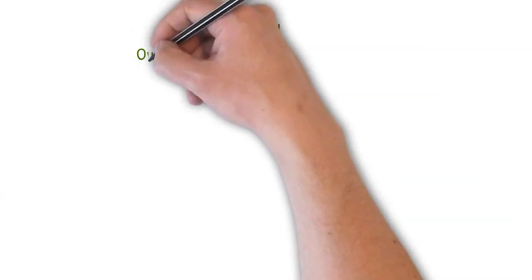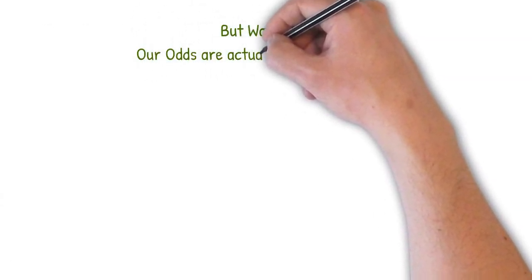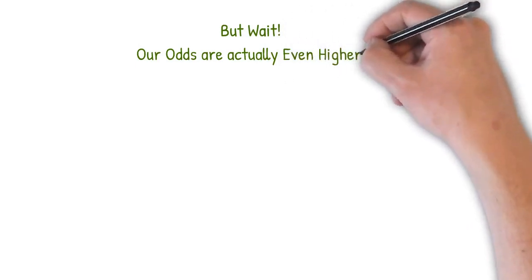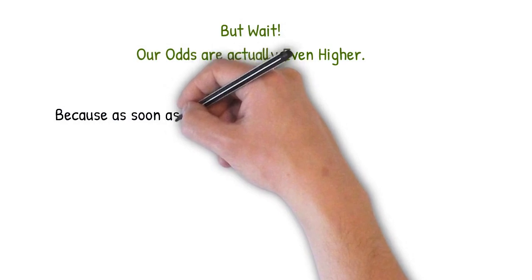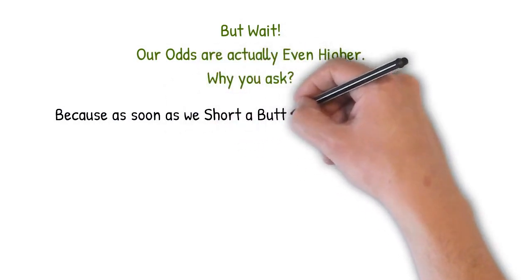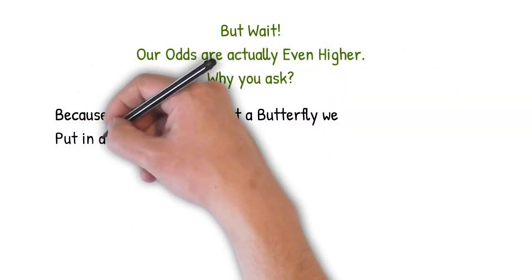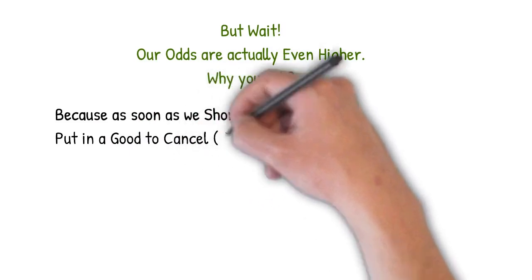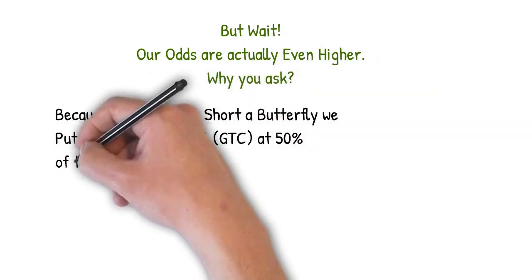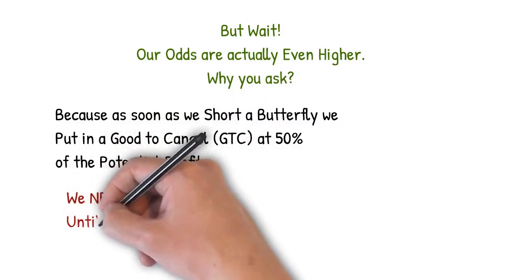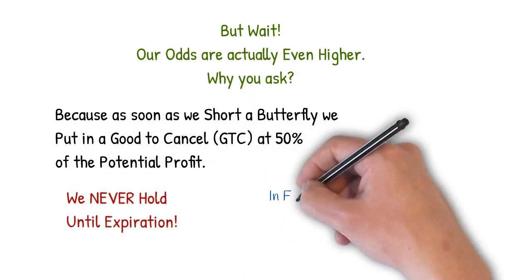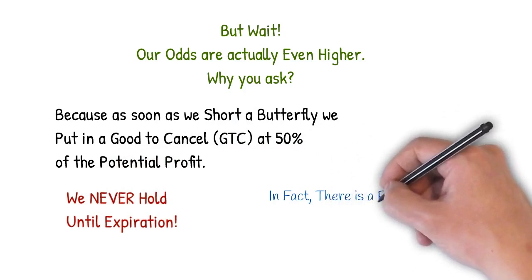But we will let you in on a little secret right now. Our odds are actually higher than 87%. As soon as we short a butterfly, we immediately place a good to cancel order in at 50% of the potential profit. We never hold these until expiration. In fact, if it starts getting close to expiration, there is a point when we will just manually close these at whatever profit or loss is currently showing.